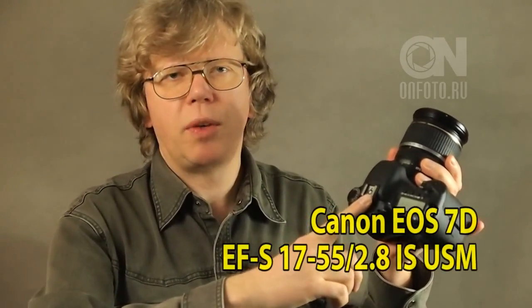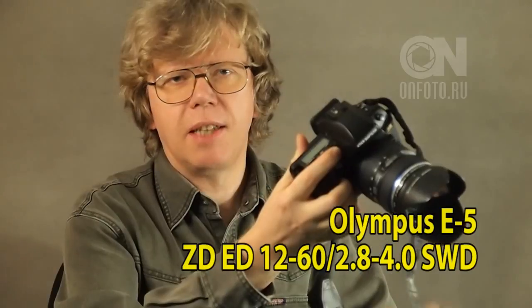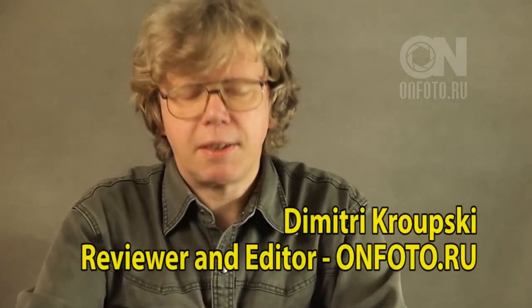The first one is based on shifting elements within the lens. This is Canon 7D with 1755 lens. The second type is based on the sensor shift within the camera body. And this is Olympus E5 with 1260 lens. Let's try to check which of the techniques is more effective.